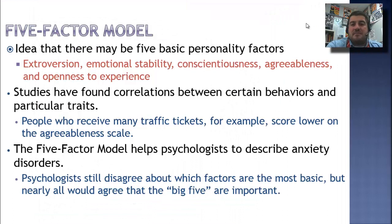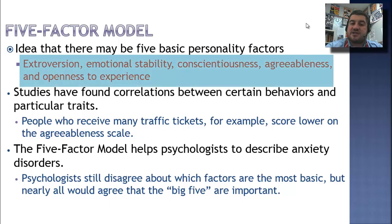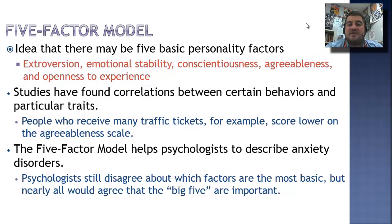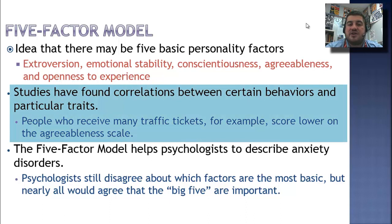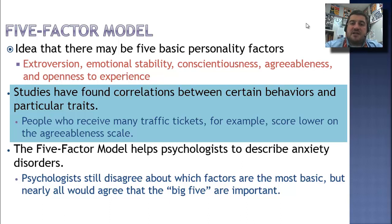The five-factor model: psychologists have a hard time agreeing on what traits make up humanity, but they can agree on these five. The five basic personality factors are extroversion, emotional stability, conscientiousness, agreeableness, and openness to experience. Studies on the five-factor model have found correlations between certain behaviors and particular traits. For example, people who receive many traffic tickets and get into collisions score lower on the agreeableness scale. It may even describe politics — people who are conservative or from an authoritarian country tend not to score highly on the openness-to-experience scale.